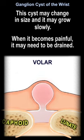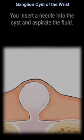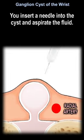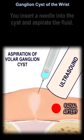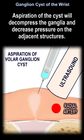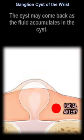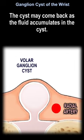When it becomes painful, it may need to be drained. You insert a needle into the cyst and aspirate the fluid. Aspiration of the cyst will decompress the ganglia and decrease pressure on the adjacent structures. The cyst may come back as the fluid accumulates in the cyst.